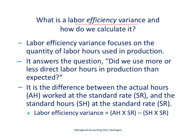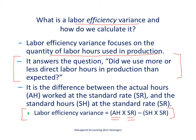Next, the labor efficiency variance focuses on the number of labor hours used in production. It answers this question: did we use more or less direct labor hours in production than we expected to use? The labor efficiency variance is calculated by taking the actual hours worked by our direct labor workforce multiplied by the standard rate per hour, and subtracting from that the standard hours we expected our workforce to work given actual production, multiplied by the standard rate per hour. We hold the standard rate per hour constant and compare standard hours to actual hours.